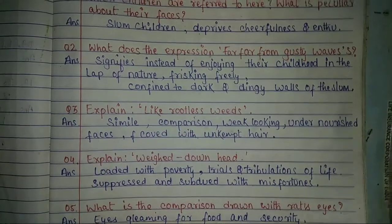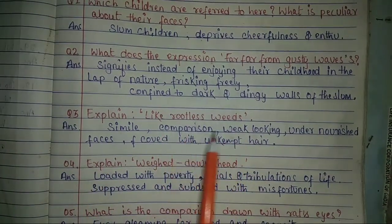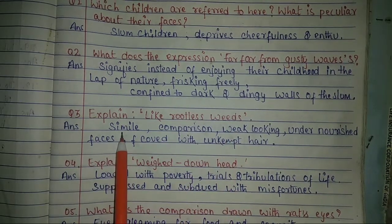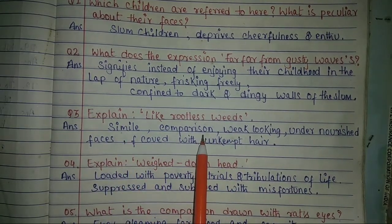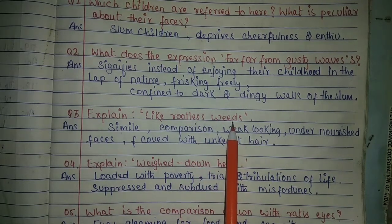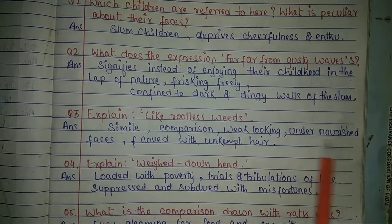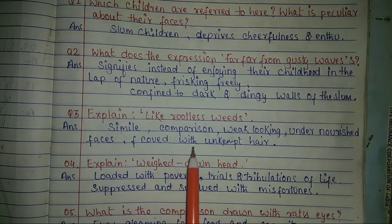Explain 'like rootless weeds.' Weeds are unwanted plants. The literary device here is simile, and we find a comparison of these weak unwanted weeds with children who are weak-looking, undernourished, and covered with unkempt hair.